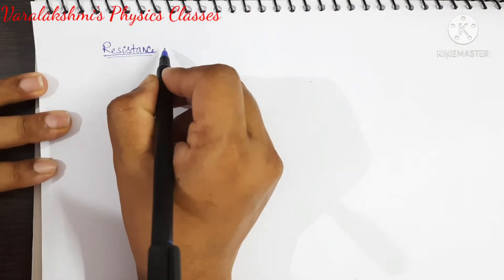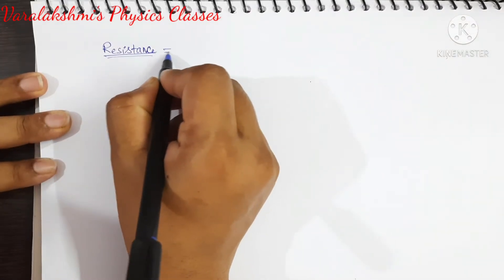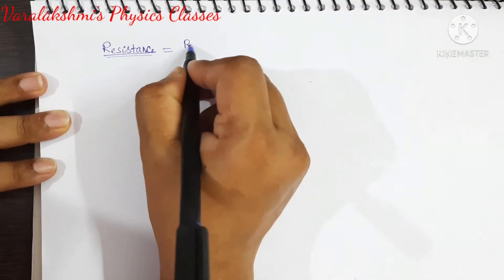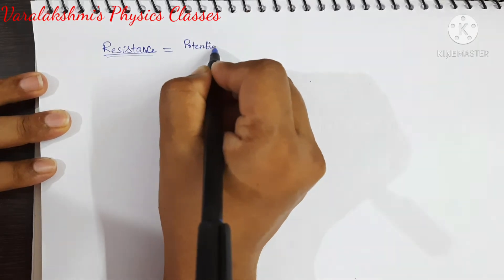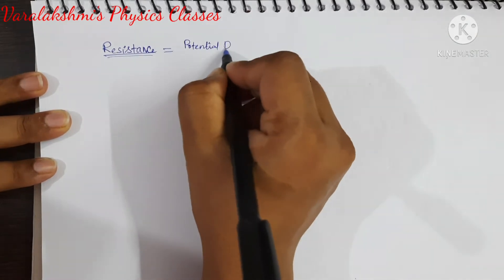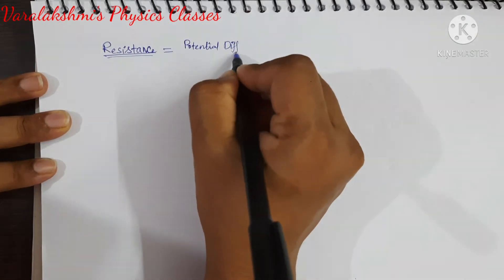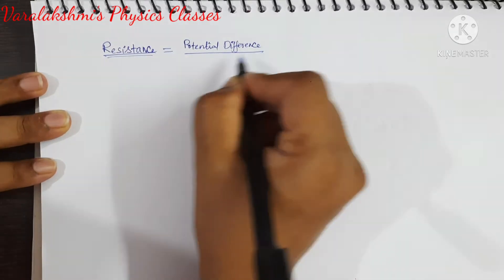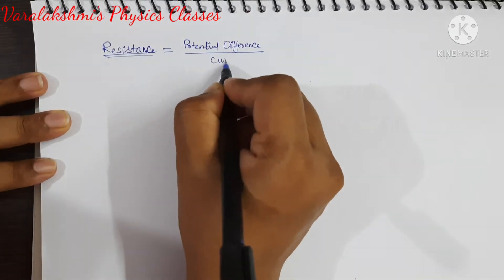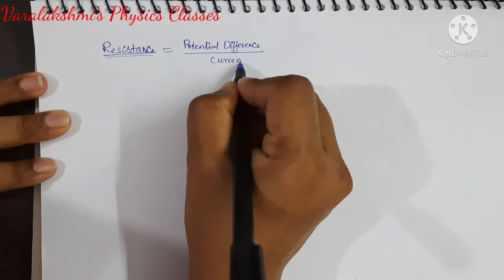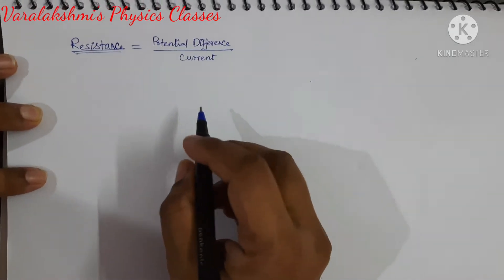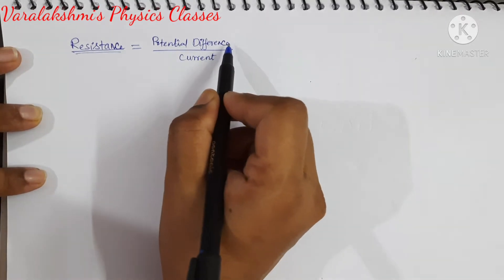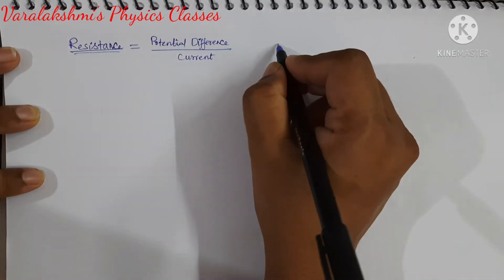The formula for resistance is potential difference upon current. Now let us find separately for potential difference, then we will substitute in this equation.